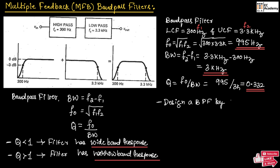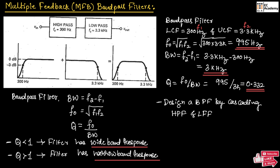We can design a band pass filter by cascading a high pass filter and a low pass filter as shown in this figure. This is the response of the high pass filter with cutoff frequency 300 Hz, and this is the response of the low pass filter with cutoff frequency 3.3 kHz. The overall response of the band pass filter will be the combined response, giving a band pass filter with lower cutoff frequency 300 Hz and upper cutoff frequency 3.3 kHz. For this response, we have calculated the cutoff frequency, bandwidth, and quality factor.